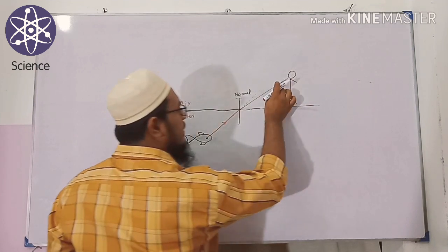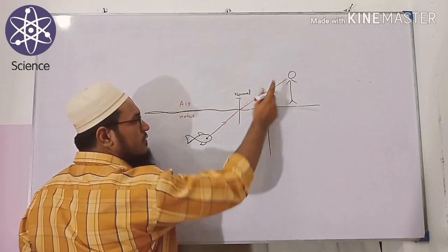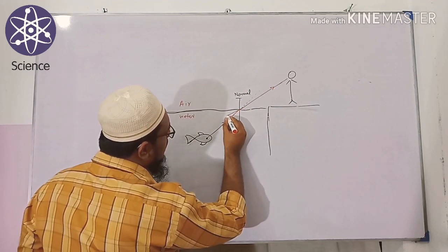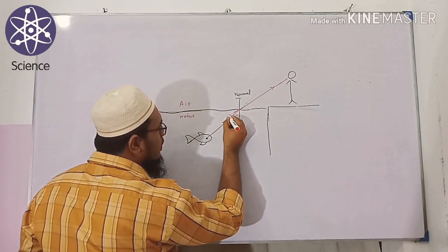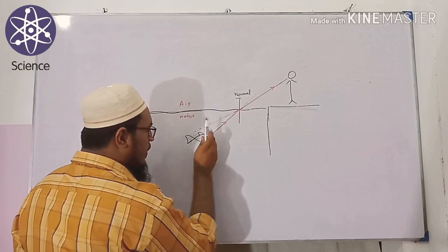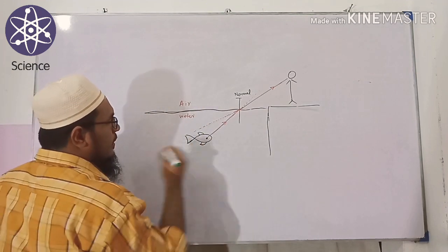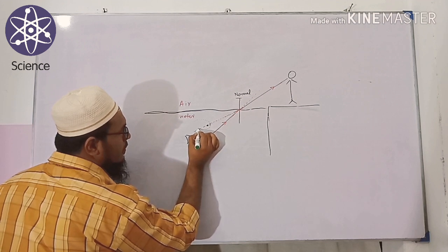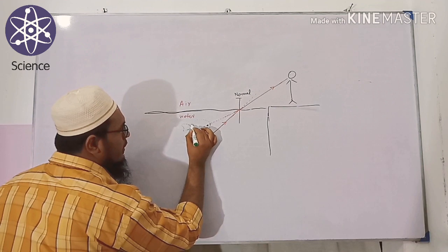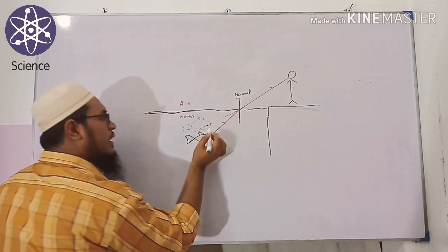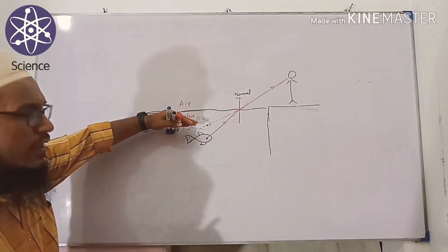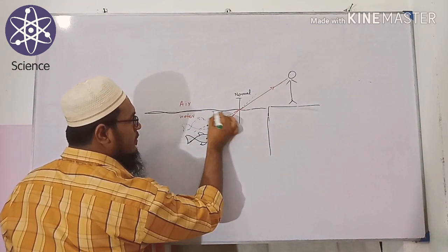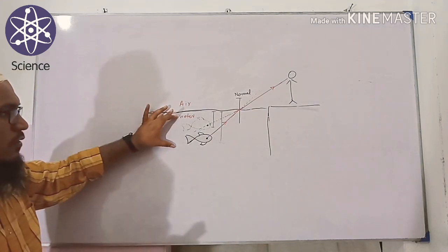The person sees the refracted light ray and perceives the fish as being along that straight line. Drawing a dotted line back, the person sees a virtual image of the fish at a shallower position than the real fish. This difference between the real depth and the apparent depth is also a result of refraction.